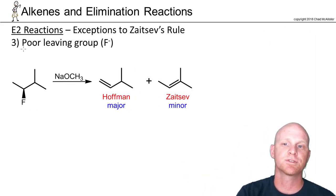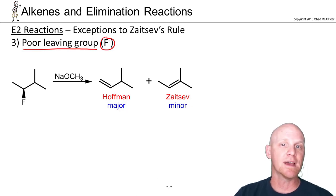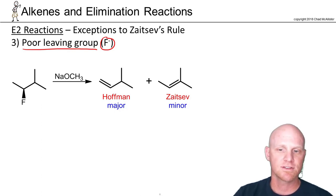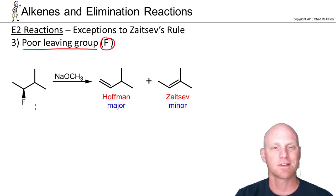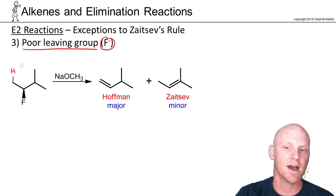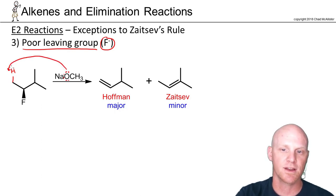The third exception to Zaitsev's rule is a poor leaving group — specifically fluoride. Chloride, bromide, and iodide are great leaving groups, being conjugate bases of strong acids. But HF is a weak acid and F⁻ is a legitimate weak base — much stronger than chloride, bromide, or iodide — making it a poor leaving group. When that's the case, the E2 mechanism is a little sluggish. As we draw in a beta hydrogen and begin the proton transfer to form a pi bond and kick off the fluorine, the fluorine is reluctant to leave.